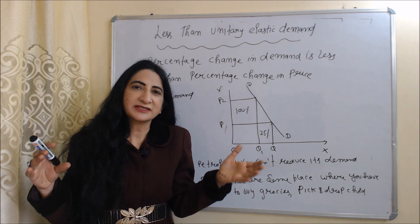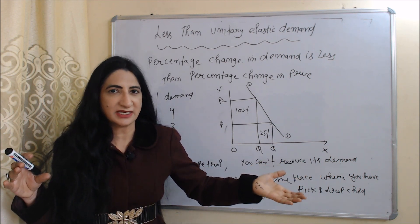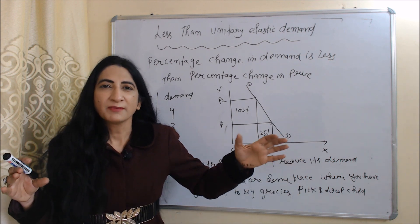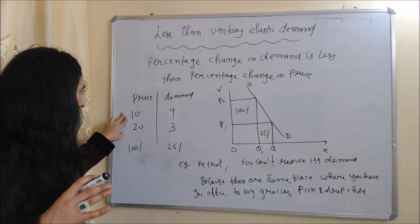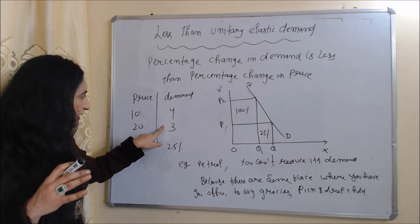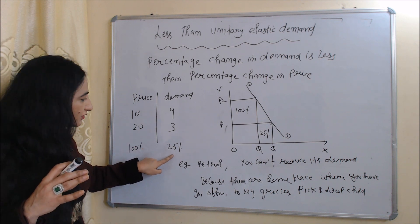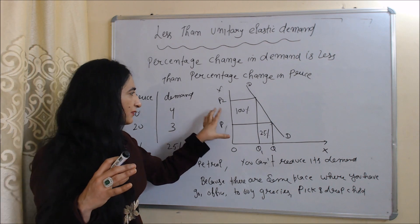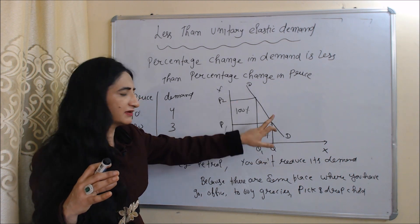The next type is less than unitary elastic demand. Less than unitary elastic demand is a situation in which the percentage change in demand is less than the percentage change in price. In this table, the price increases from 10 to 20 — a 100 percent increase. In response, demand reduces from 4 to 3 — only a 25 percent reduction. So here, the percentage change in demand is less than the percentage change in price. In the diagram, price increases by 100 percent and demand reduces by only 25 percent. DD is our demand curve.